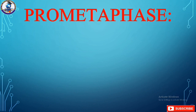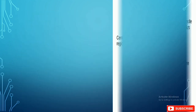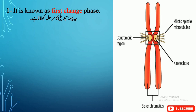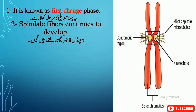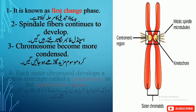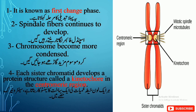The second phase is pro-metaphase, which is just before metaphase. It is known as the first change phase. Spindle fibers continue to develop from centrosomes, chromosomes become more condensed, and each sister chromatid develops a protein structure known as a kinetochore, which can be seen in the slide on the right side in the centromere region.